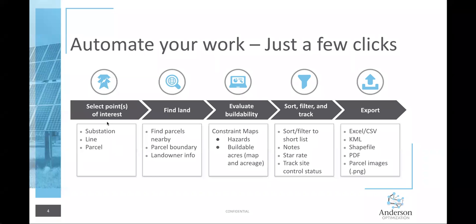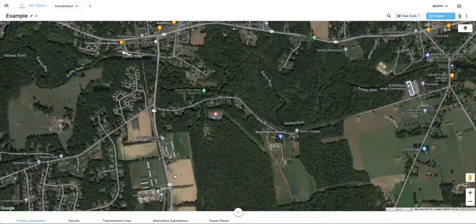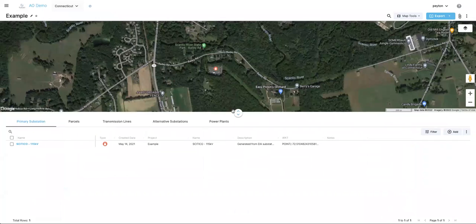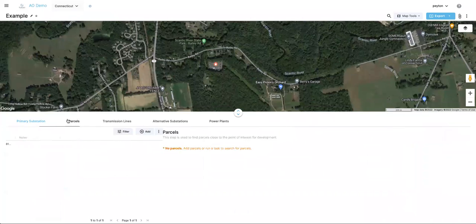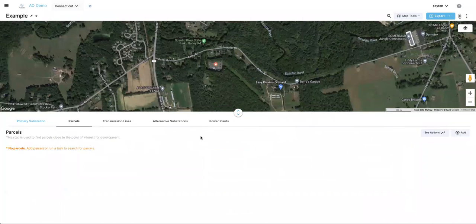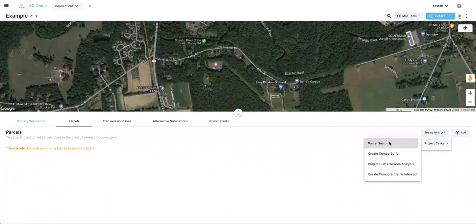We've selected our point of interest, so the next step is to find land nearby the substation. We'll be able to see parcel boundaries as well as landowner information and data associated with those parcels. To do a parcel search, pull up this drawer from the bottom and go to the parcels tab — this is where the parcel search is located. Hit C Actions on the right-hand side, go to project tasks, and then parcel search.